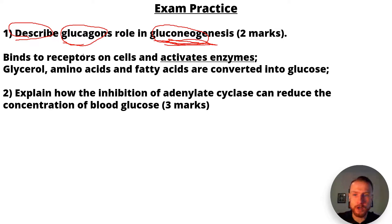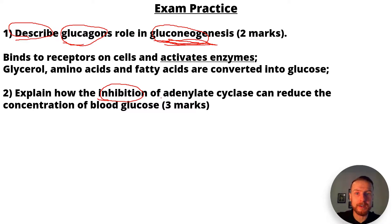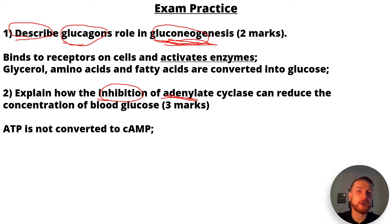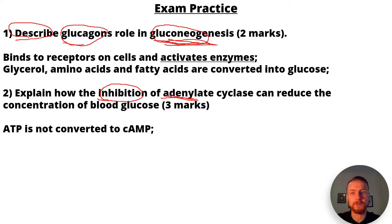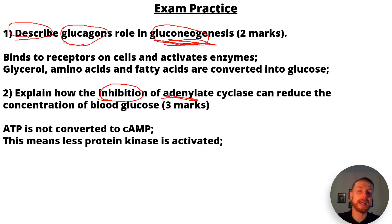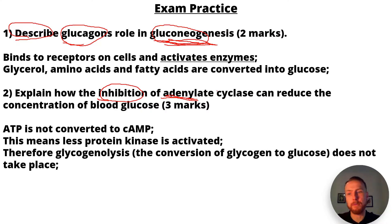Question two: explain how the inhibition of adenylate cyclase — also known as adenyl cyclase — can reduce the concentration of blood glucose. First mark: ATP is not converted to cyclic AMP, because adenylate cyclase catalyzes that conversion. Second mark: less protein kinase is activated. Third mark: therefore glycogenolysis — the conversion of glycogen to glucose — does not take place.